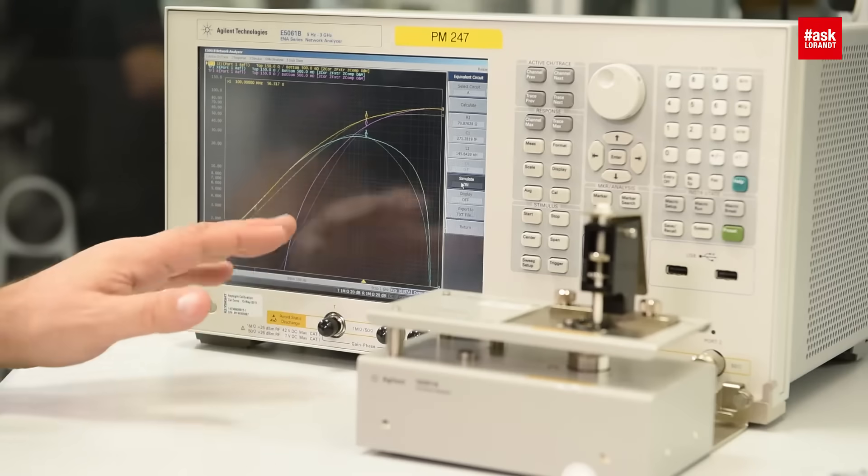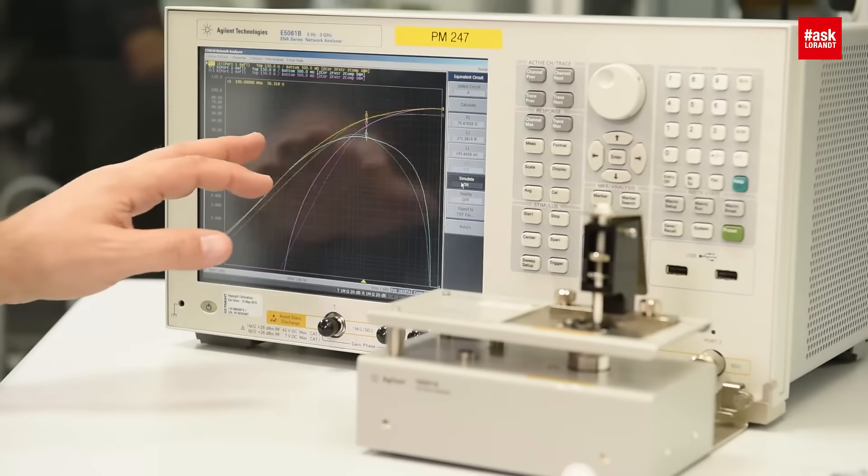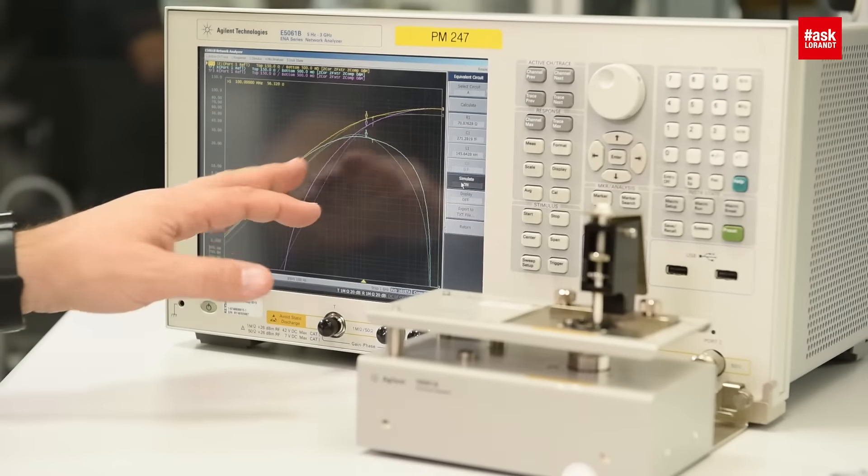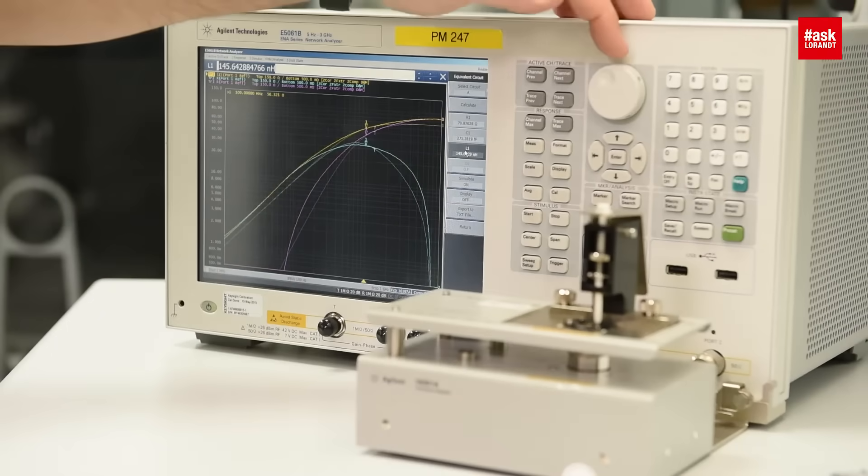And now you can see the Z value is quite correct. The R value is quite nearly correct. We have to correct a little bit on the L size. So I will press the L, and then slowly modify the inductance value to fit the reality. You can see this.